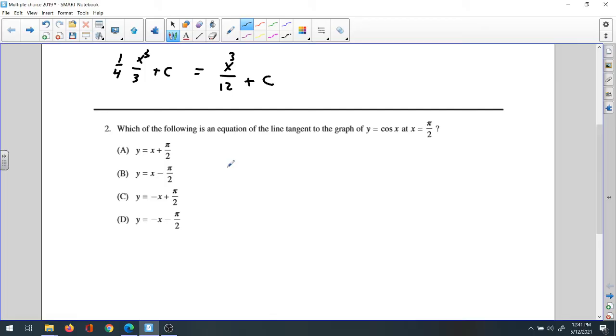of the following is an equation of the line tangent to the graph of y equals cosine x at x equals π/2? What we need to do, just to remind you that we had before in Algebra 2,